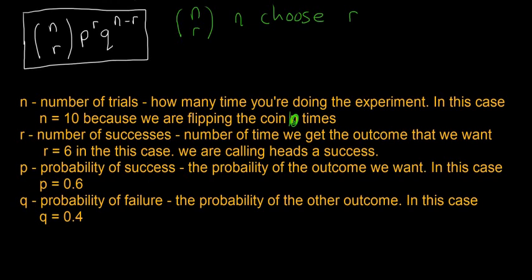p then is the probability of success, the probability of the outcome that we want. And in this case, that's 0.6 because the probability of the heads is 60% or 0.6.